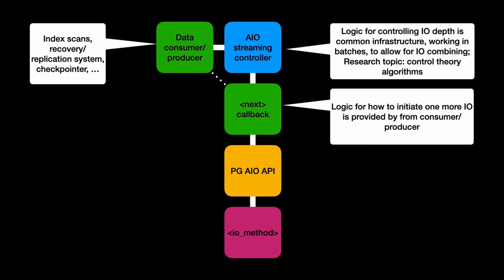This is done using an architecture that lets data consumers and producers separate consumption or production of data from a callback saying how to do the next step. An IO streaming controller can achieve various goals like looking further ahead, controlling total IO depth, doing enough IO to reduce latency at the consumption end, but not doing too much IO — which would be senseless and a waste.